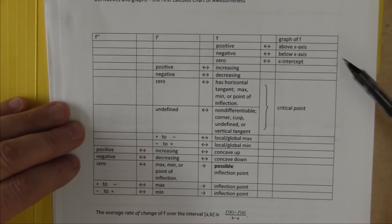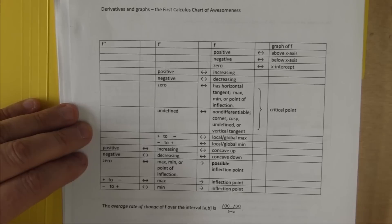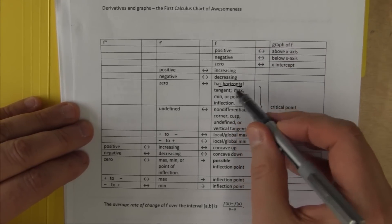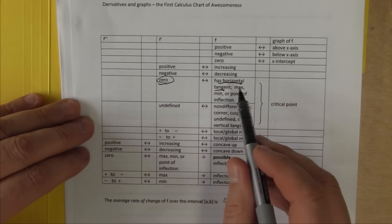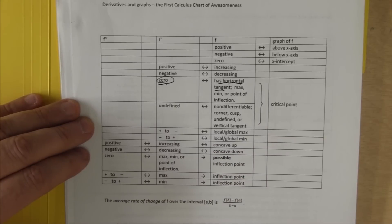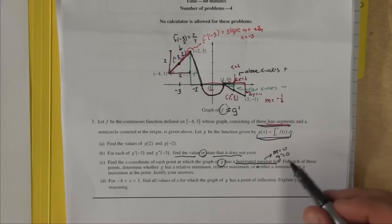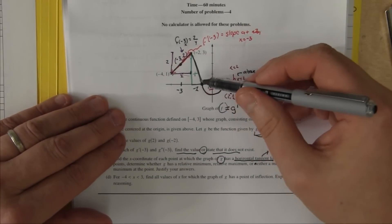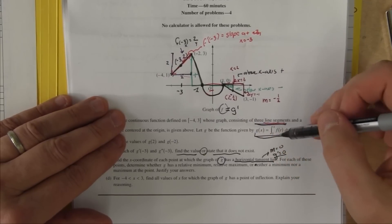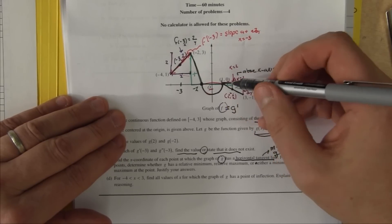This chart gives the relationship between the graph of f, f prime, and f double prime. We have a horizontal tangent whenever f prime is 0. So: if f prime is 0, f has a horizontal tangent; if f has a horizontal tangent, f prime is 0. That's the first part of this calculus chart of awesomeness we're going to use. The two points where g prime equals 0 are x equals negative 1 and x equals 1.